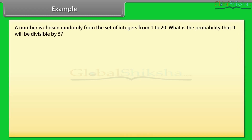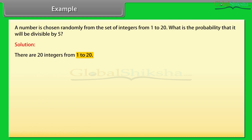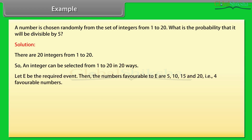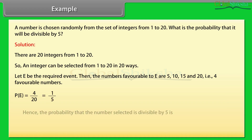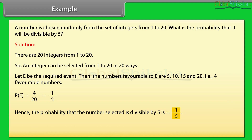Example: a number is chosen randomly from the set of integers from 1 to 20. What is the probability that it will be divisible by 5? Solution: there are 20 integers from 1 to 20, so an integer can be selected in 20 ways. Let E be the required event. Then the numbers favorable to E are 5, 10, 15, and 20 — that is, 4 favorable numbers. Probability of event E is equal to 4 by 20, which equals 1 by 5. Hence, the probability that the number selected is divisible by 5 is 1 by 5.